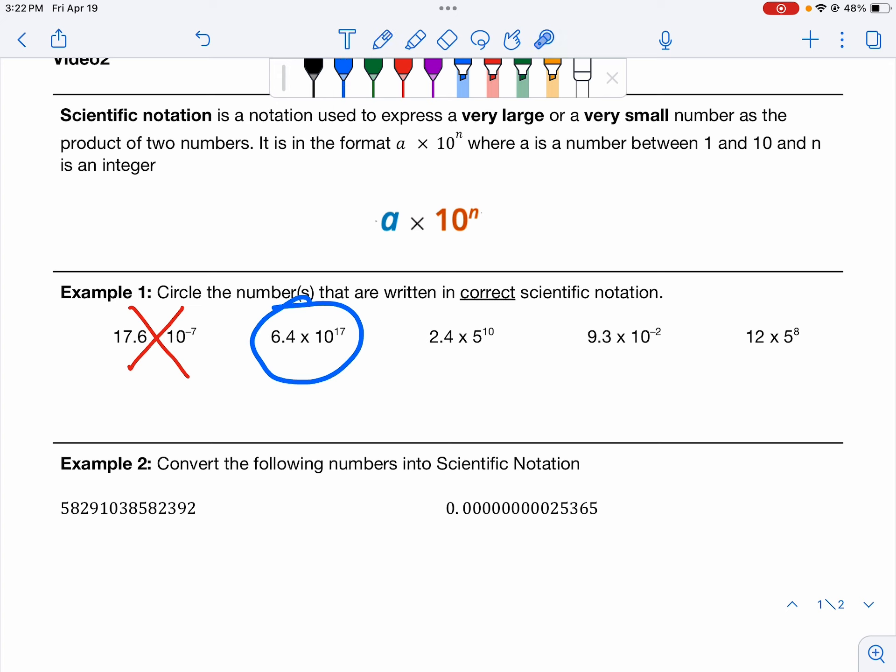Let's look at the second one. 2.4, we're good there. 10, that's an integer, but that 5, that's not what it should be. It should be 10 to the n. So this is not in scientific notation.